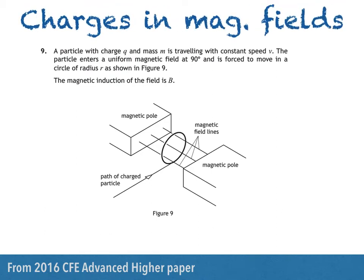Hi there, in this video I'll be answering a question about charged particles moving in a magnetic field, deriving an equation for the radius of the particle's circular path and calculating its velocity and the magnetic induction of the field it's moving in. Here's a question from the 2016 CFE Advanced Higher paper.